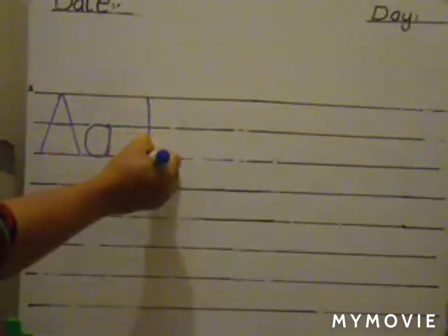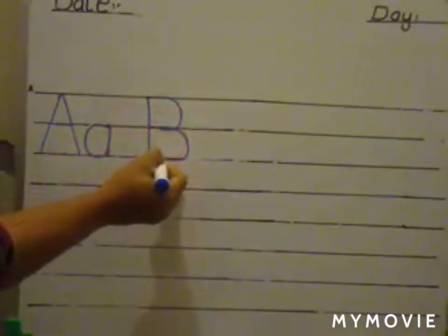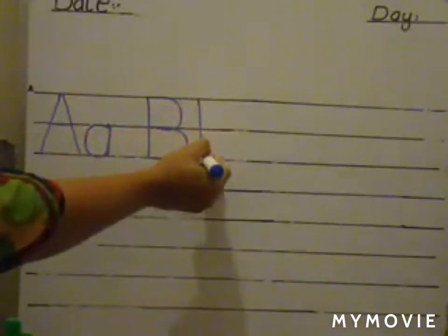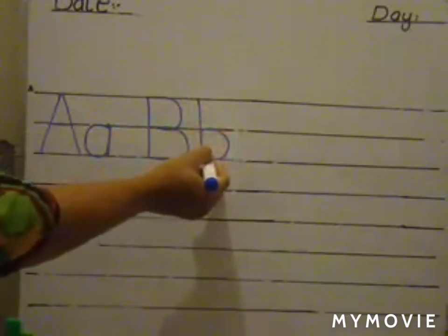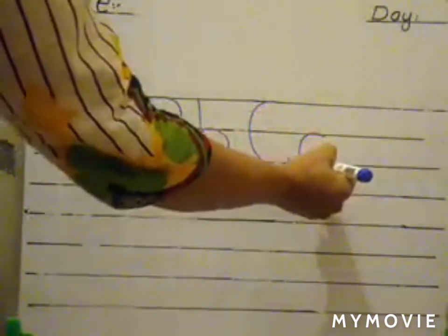Now, what comes after A? B. Good. Go back to the top — uppercase B. Lowercase B. What comes after B? C. Uppercase C. Lowercase C. A, B, C.